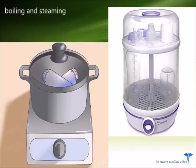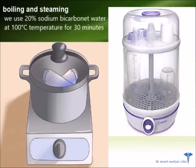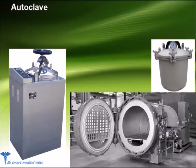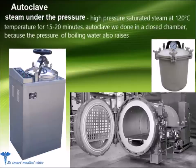Boiling and steaming. For boiling and steaming, we use 20% sodium bicarbonate water at 100 degrees Celsius temperature for 30 minutes. Autoclave — in autoclave, or steam under pressure, we use high pressure saturated steam at 120 degrees Celsius temperature for 15 to 20 minutes. Autoclave is done in a closed chamber, because the pressure of boiling water also raises.